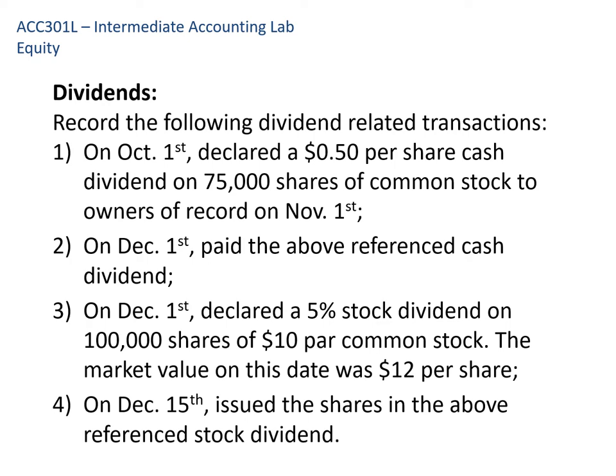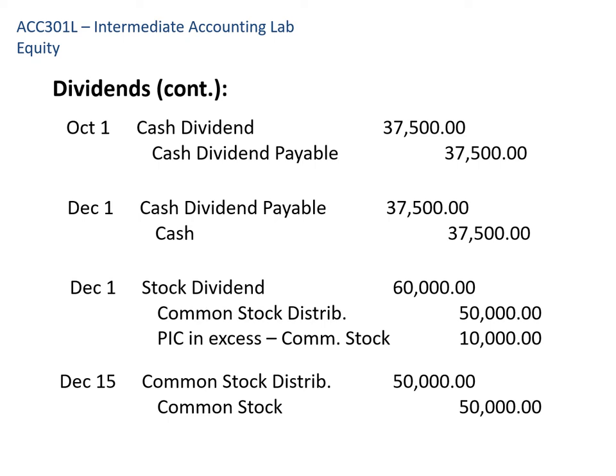For the first entry, when the board of directors declares the dividend, we debit cash dividend — a temporary account under retained earnings that is closed at year end — for $0.50 times 75,000 shares, and we credit cash dividend payable. On the date of record, November 1st, there is no entry made; we simply note who owns how many shares. On December 1st, when we pay the dividend, we're paying a current liability, so we debit the current liability and credit cash.